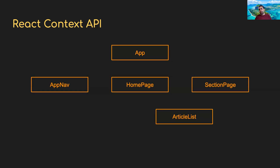I'm going to go to something we've mocked up in our news site. At the very top we have our App component, then child components: an AppNav component for navigation with a homepage link, a homepage component that shows a list of every article from the server, and a SectionPage component that filters down based on the section clicked. Then we have a grandchild component called ArticleList, which is used by both Homepage and SectionPage.